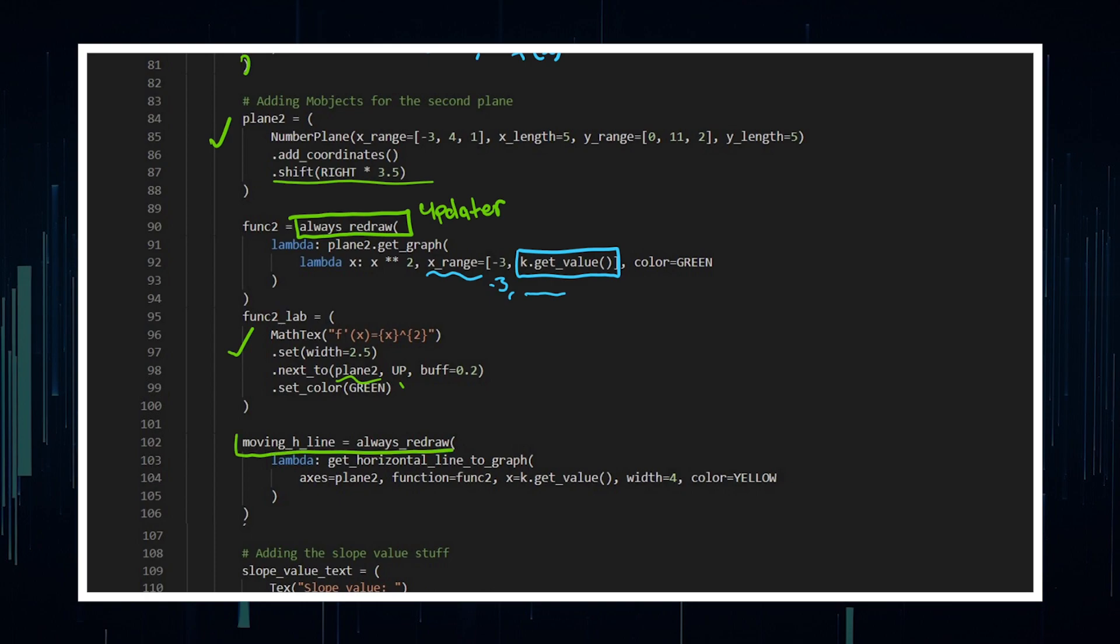We add some text, put it next to the plane and up from it. And I'm going to be adding my horizontal line, which you can see is always redraw, where I am accessing my get horizontal line to graph. Now you notice I don't have a plane two dot get horizontal line to graph, because I've built in the axis which I am calling it on. So the function, call it to the function two, and the X value again, this is being tracked by the value tracker.